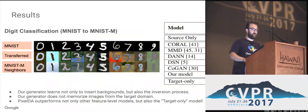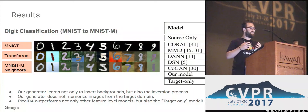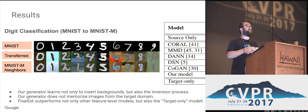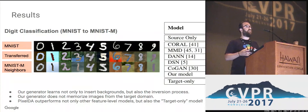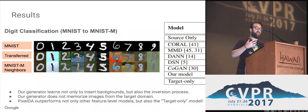Let's look at qualitative results for the first domain adaptation scenario. From top to bottom: the first row is the input to the generator as source images; the second row is the output of our generator; and the third row shows the MNIST-M samples visually most similar to the corresponding generated images. For the quantitative results, the table on the right shows accuracy on the MNIST-M test set. The source-only row refers to a model trained only on MNIST digits with no domain adaptation, and the target-only row corresponds to a model trained on the MNIST-M training set — these serve as soft lower and upper bounds for our domain adaptation methods.